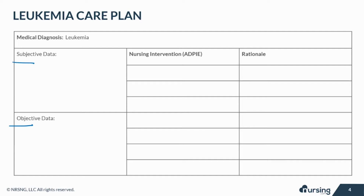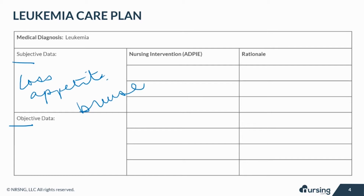Subjective data consists of things based on your patient's opinions or feelings. These may include loss of appetite, weight loss, the tendency to bruise or bleed, fatigue, weakness, and bone pain.